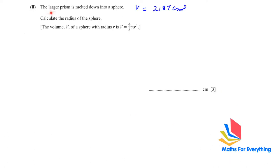Part two: the larger prism is melted into a sphere. The volume remains the same at 2187 cm³. Using the sphere volume formula V = (4/3)πr³, we need to calculate the radius.